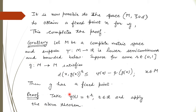Clearly, ξ(t) = t^r is continuous, increasing, concave downward, and vanishes at 0, so it satisfies all the hypotheses of the previous theorem. Therefore, by applying the previous theorem, g has a fixed point.